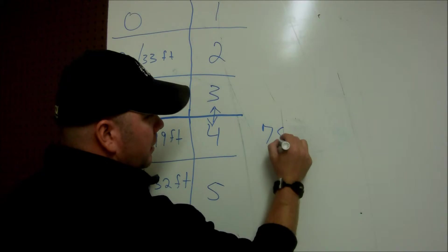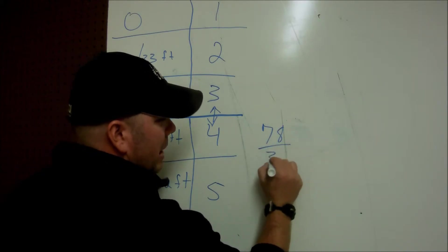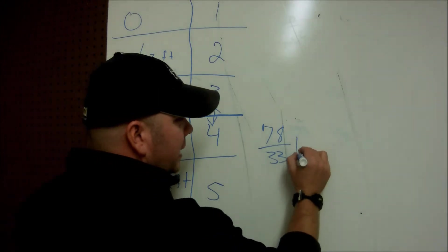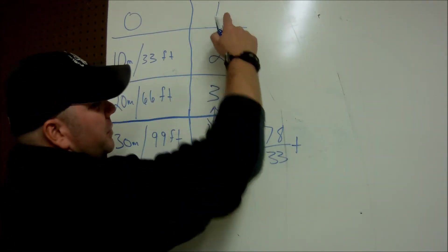So you do that, I'm going to take 78 feet. I will divide it by 33, which is what an atmosphere is. And then at the end, I will add the atmosphere back.